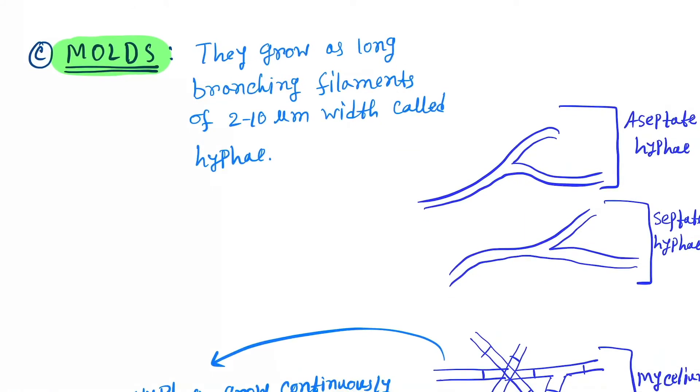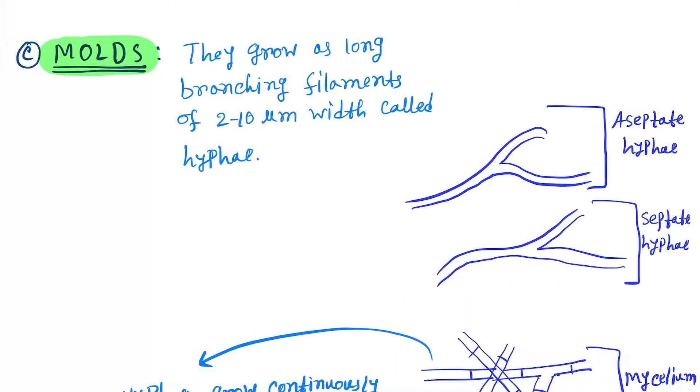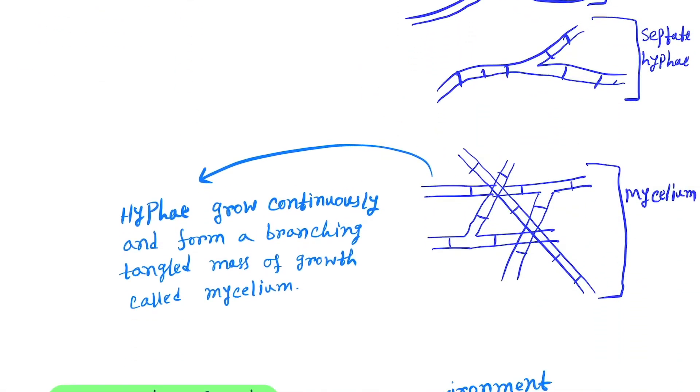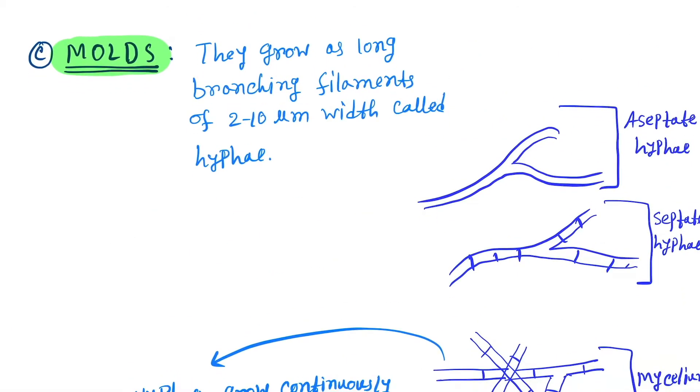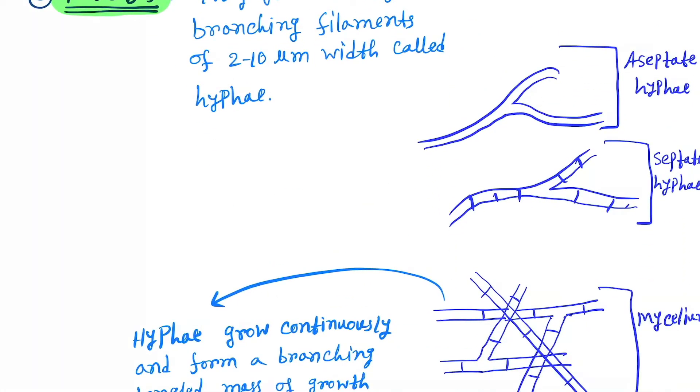Next one is molds. Molds grow as long branching filaments of 2 to 10 micrometers called hyphae. Here you can see this is aseptate hyphae and this is septate hyphae. Hyphae grow continuously and form a branching tangled mass of growth called mycelium. Examples are Rhizopus and Aspergillus.